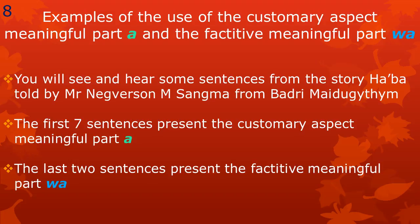Let us now look and listen at some examples of the use of the customary aspect meaningful part and the factative meaningful part. You will see and hear some sentences from the story Ha'ba as told by Mr. Negverson M. Sangma from Badri Maidugatam. The first seven sentences present the customary aspect meaningful part A and the last two sentences present the factative meaningful part Wa.